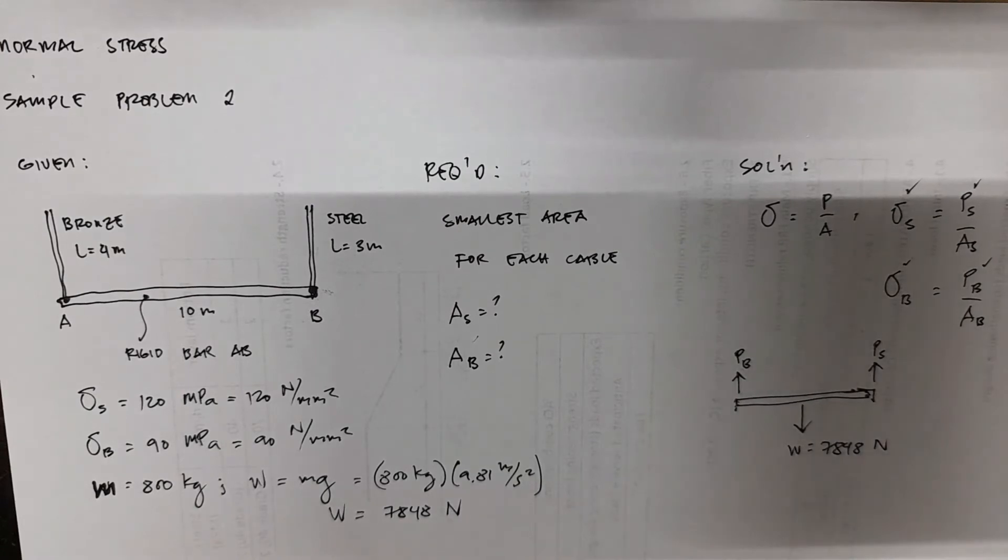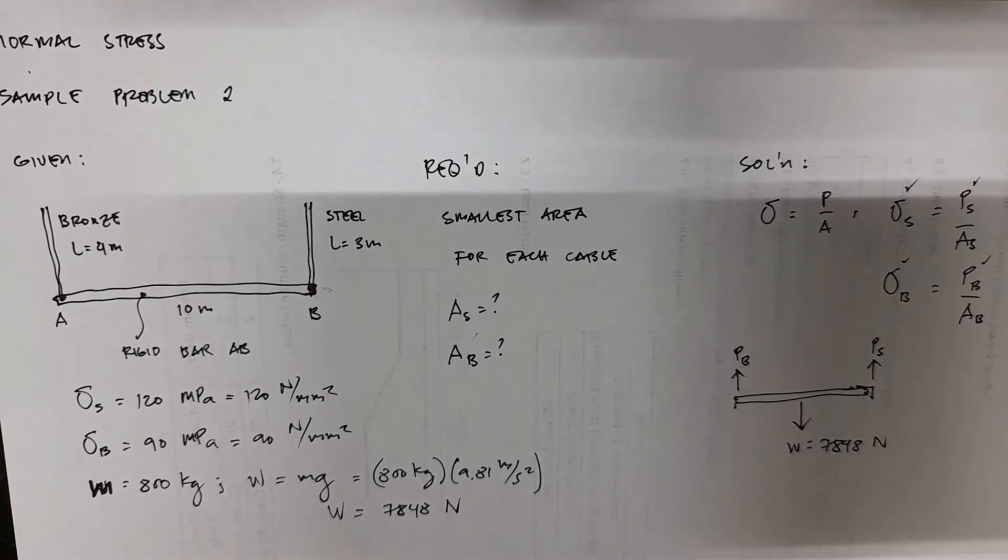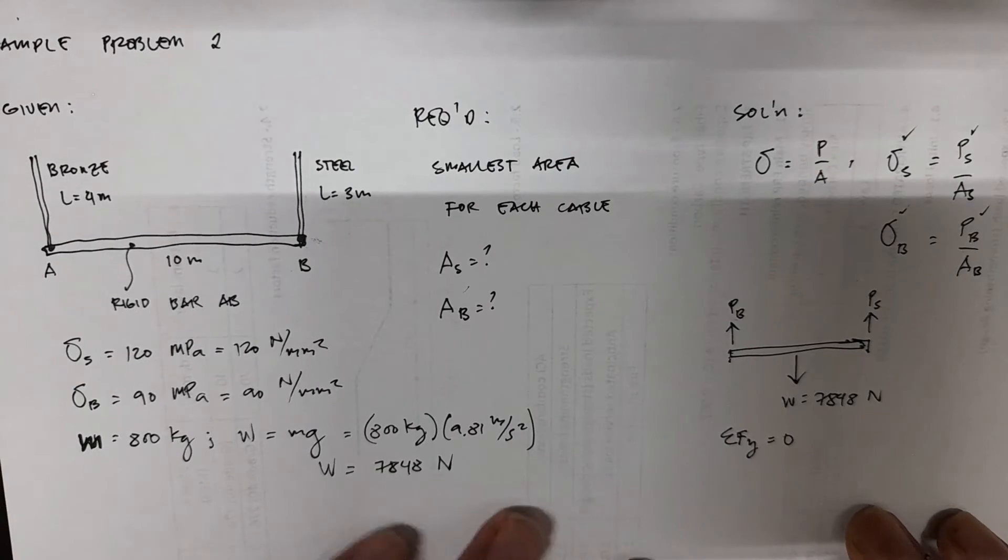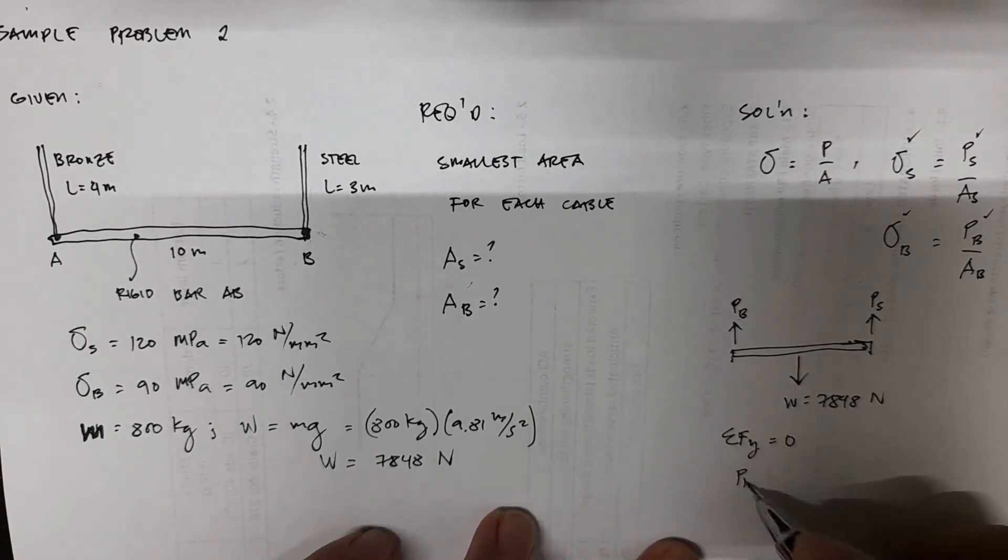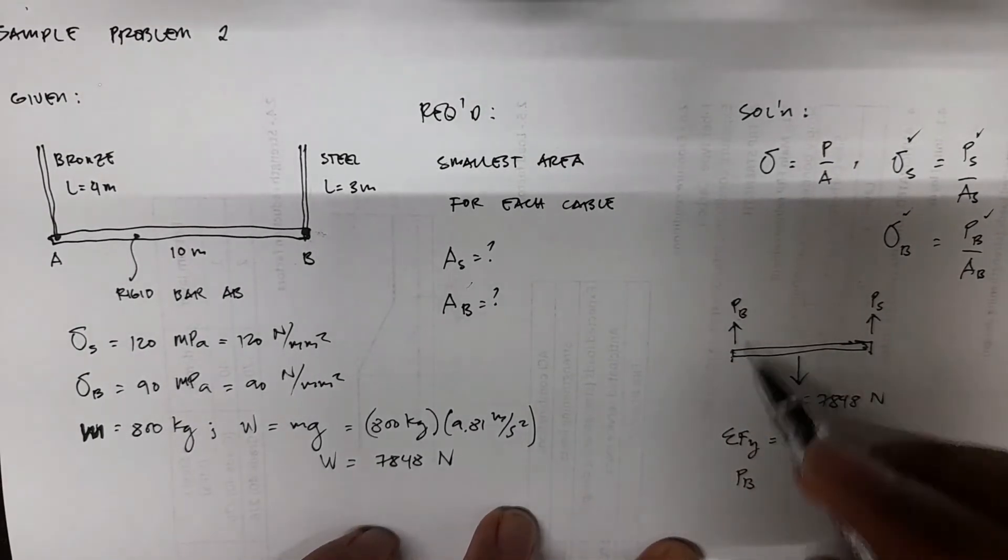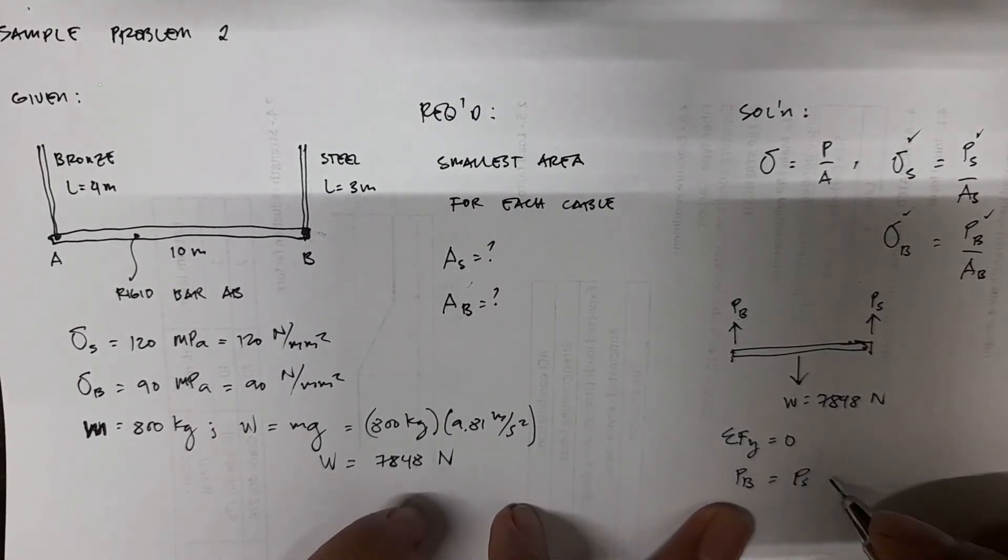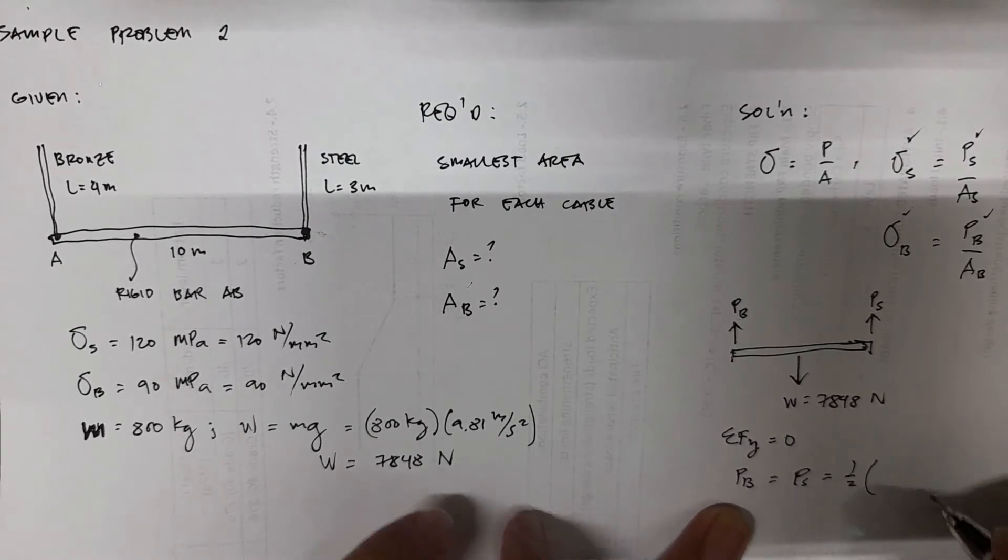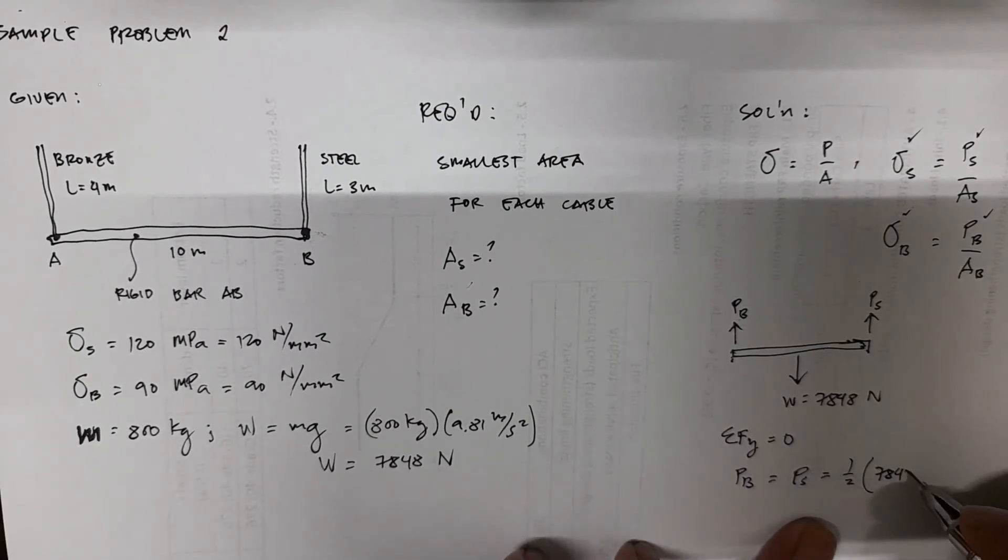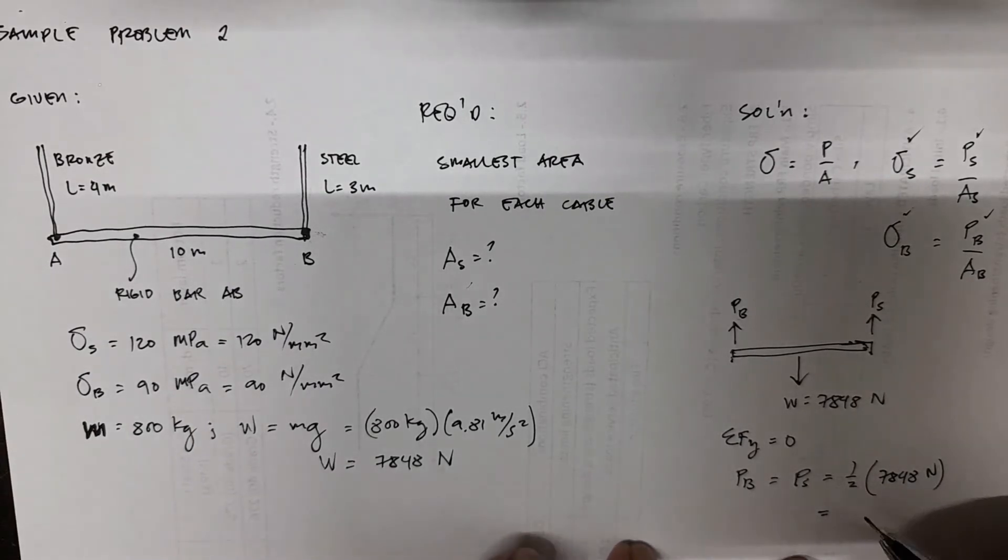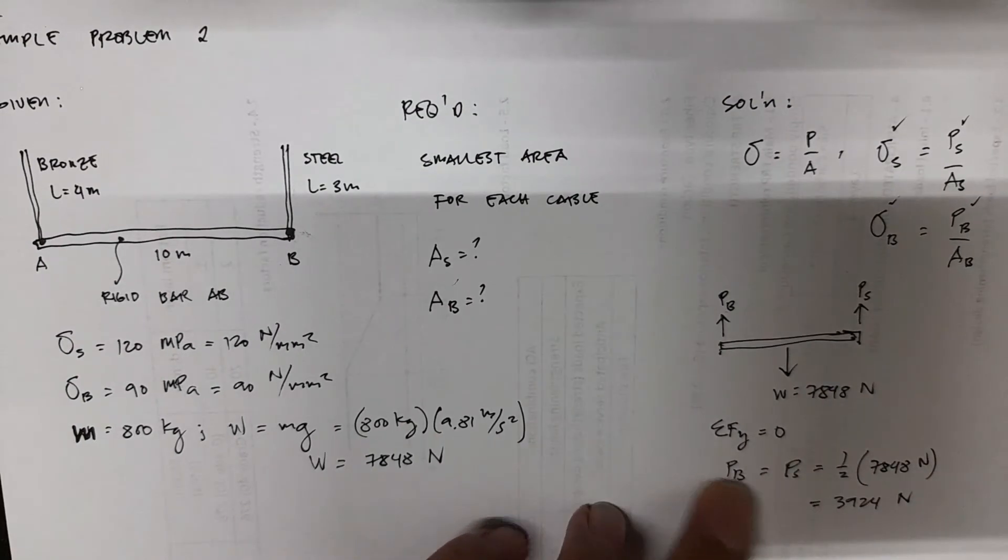So you can do summation of forces along Y. Summation of forces along the Y axis equals zero. You will have PB. Since it's symmetrical, PB and PS - it's just one half of 7848 newton, which is equal to 3924 newton. So this is PB and PS.